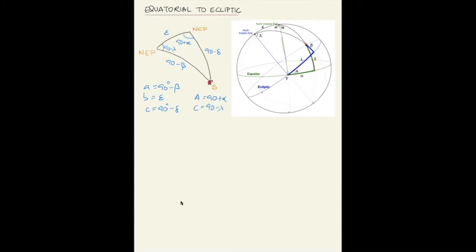Applying the fundamental law of cosines, we get: sin β = cos ε sin δ − sin ε cos δ sin α. Applying the law of sines: cos β cos λ = cos δ cos α. And applying the arc-and-angle formula: cos β sin λ = sin ε sin δ + cos ε cos δ sin α.